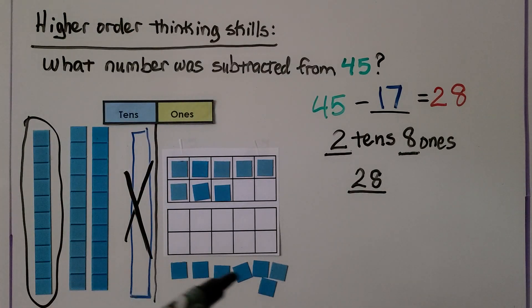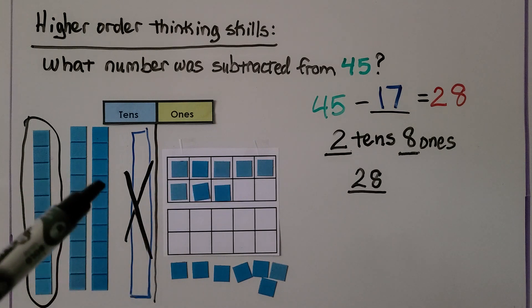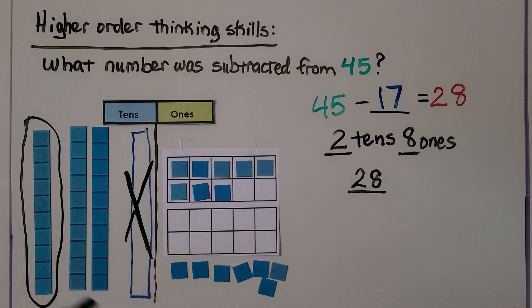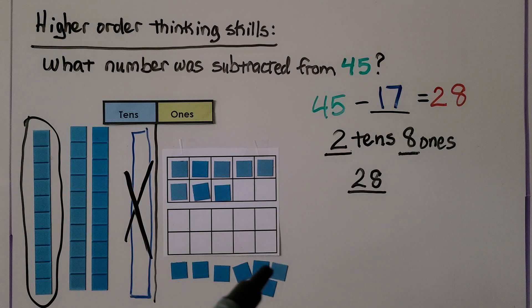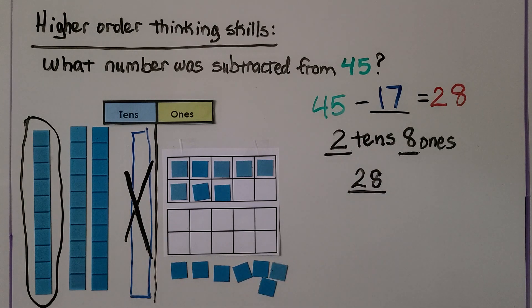Then we had to take away 7 1s to have 8 1s remaining, so we have 2 10s, 8 1s. That means we took away 10, 11, 12, 13, 14, 15, 16, 17. So the number that was subtracted from 45 was 17.